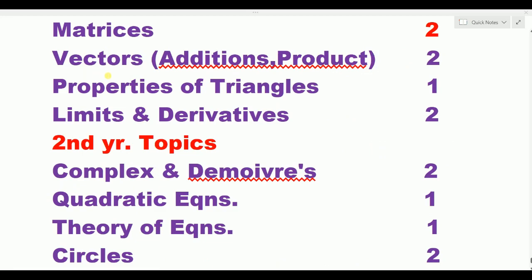The most important major branch is vectors — additions of vectors and product of vectors. Vectors require two to three days compulsory spend. For AP, there are 5 to 6 questions on vectors. Minimum two days for additions and product of vectors. This is a very easy branch, and videos are uploaded. Vectors: two days.